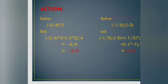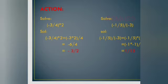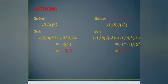For division, you change the symbol to multiplication and take the reciprocal of the second number. So minus 1/5 divided by minus 3: the reciprocal of minus 3 is minus 1/3. Therefore, minus 1/5 multiplied by minus 1/3 equals 1/15. Minus times minus gives plus.